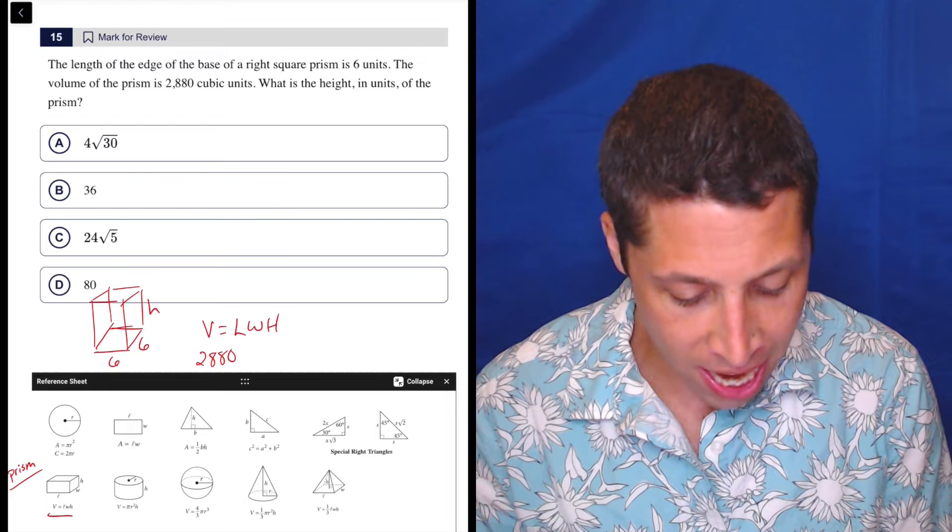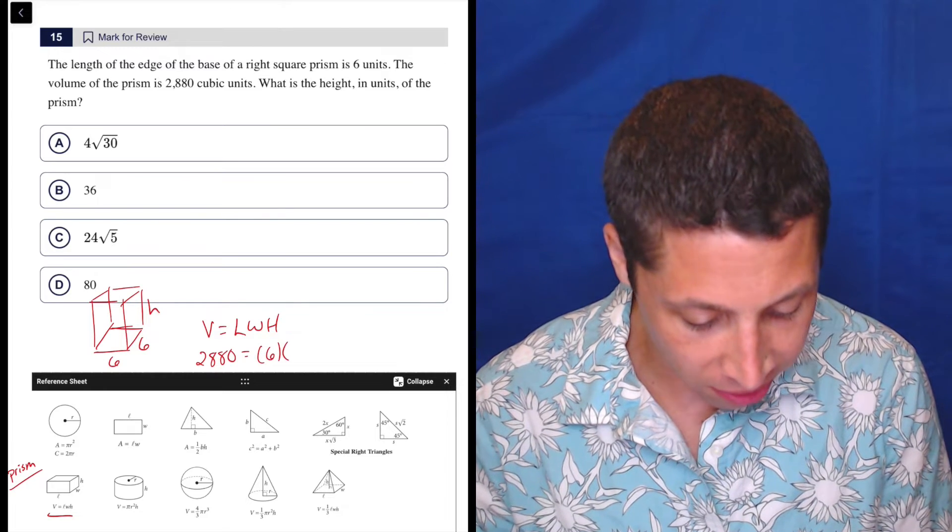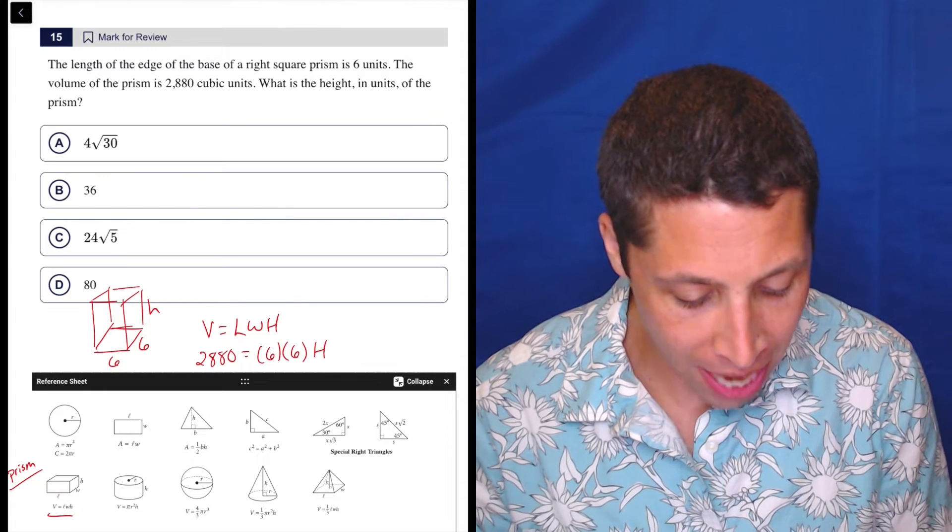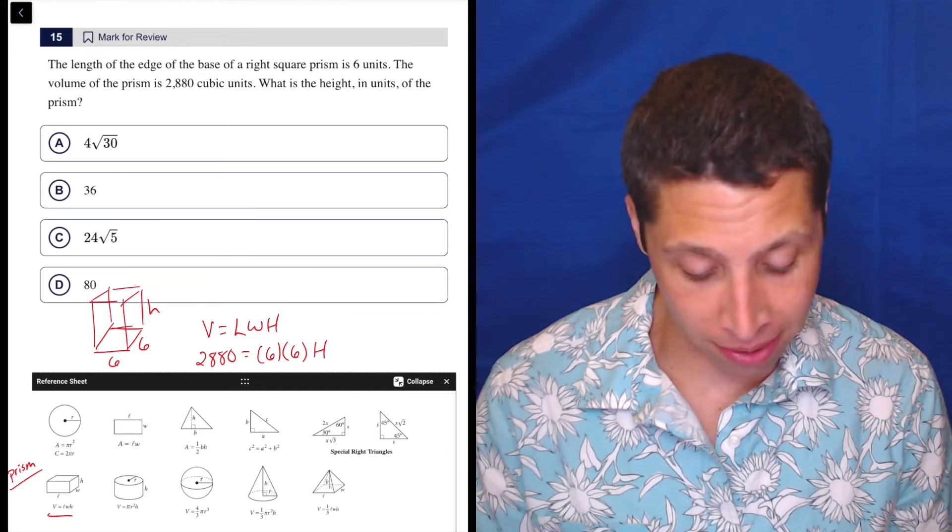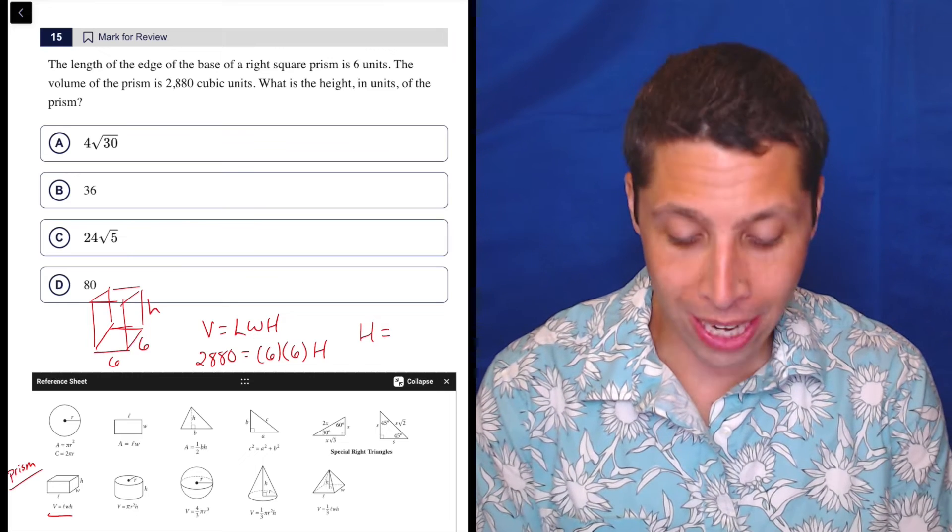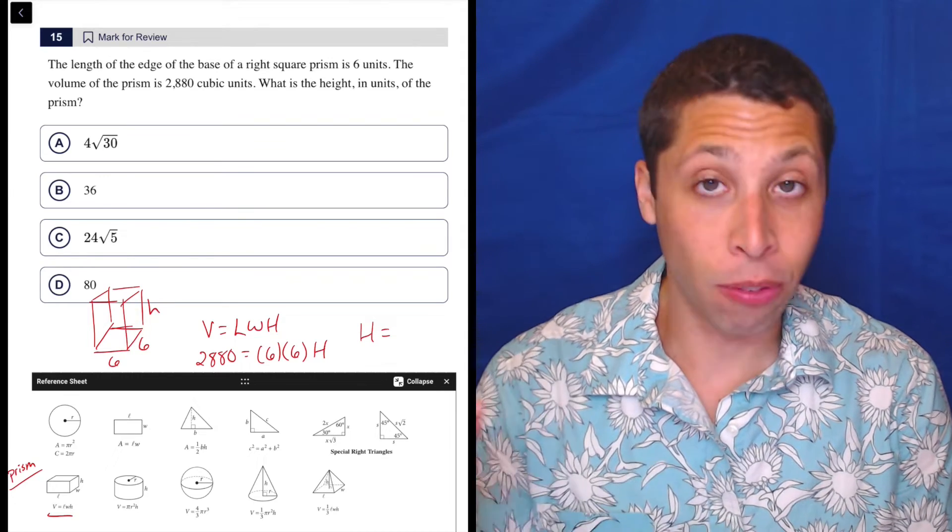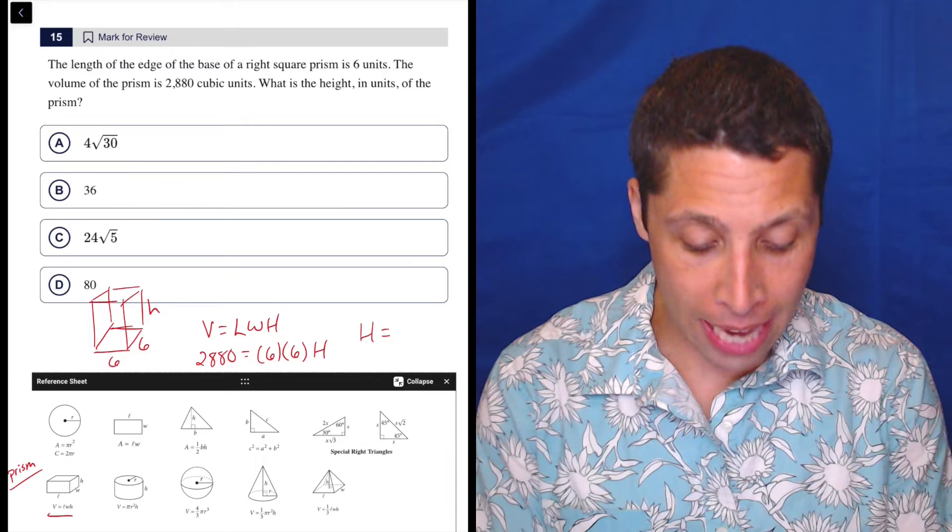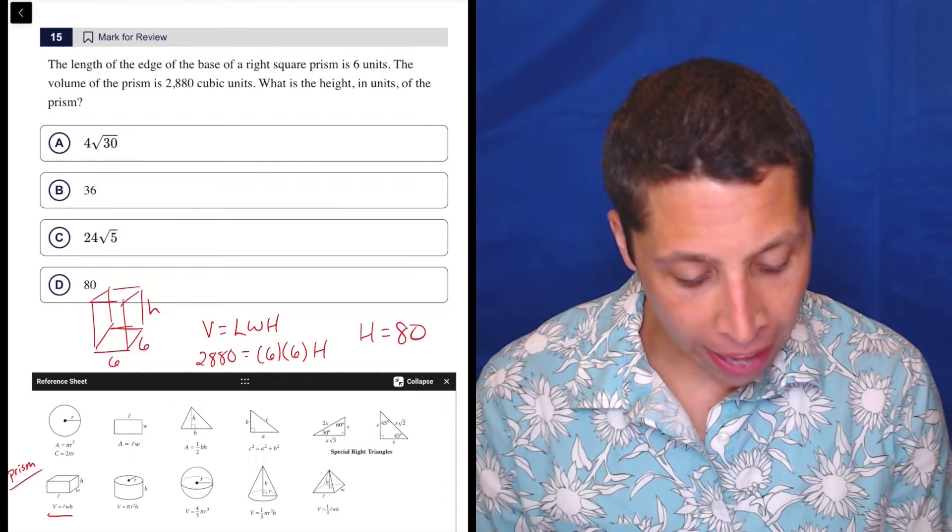So the 2880 is equal to 6 times 6 times H. So we're basically just dividing 2880 by six two times. So I'm just going to do that in my regular calculator. 2880 divided by 6 is 480. Then let's divide by 6 again, and that gives us 80. And that is the answer.